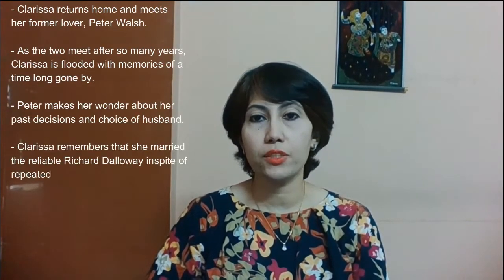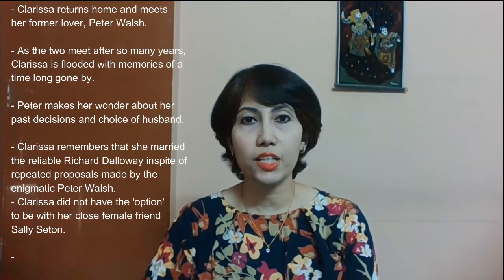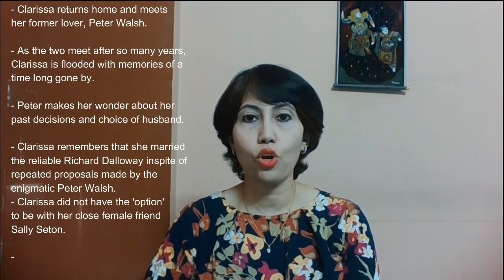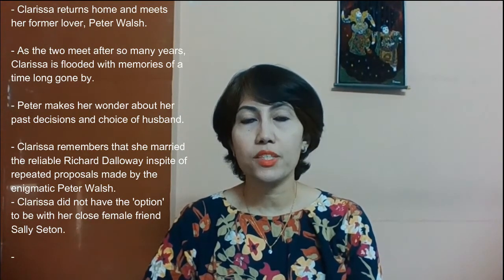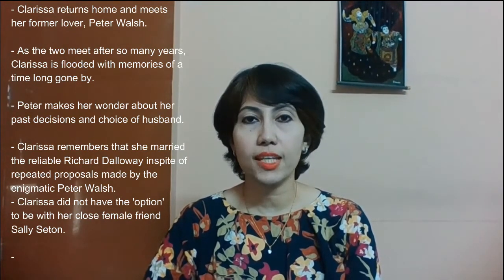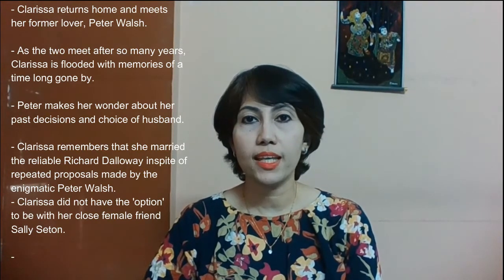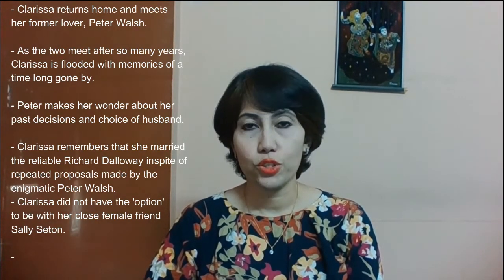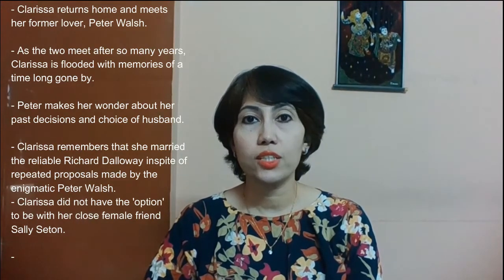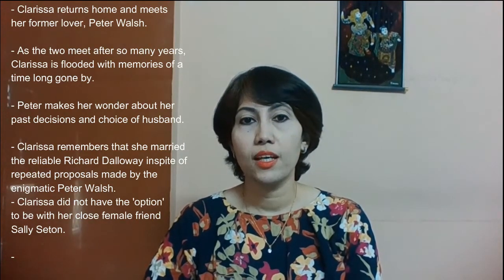Clarissa returns home and meets her former lover Peter Walsh. As the two meet after so many years, Clarissa is flooded with memories of a time long gone. Peter makes her wonder about her past decisions — she had married the reliable Richard Dalloway despite repeated proposals from the enigmatic Peter Walsh. Here, Clarissa also remembers that she didn't have the option to be with her close female friend Sally Seton.